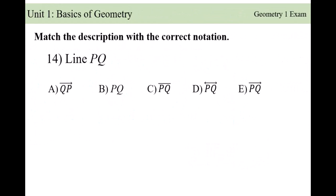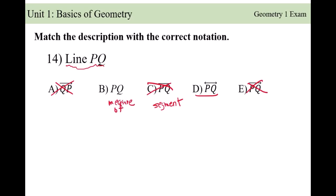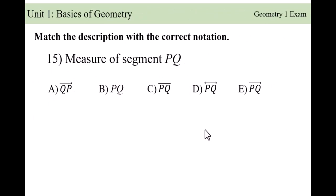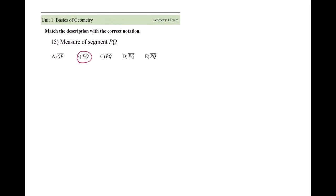Vocabulary matching: match the description with the correct notation. 'Line PQ' — not a segment, but a line. A single arrow means a ray, which is not correct. Two arrows means a line. No arrows means a line segment. No notation above the letters means the measurement — how long it is — not a line. So the correct answer is D. And the measure of segment PQ is answer B. How did you do? Drop your score in the comments and tell me which ones were easy or hard!